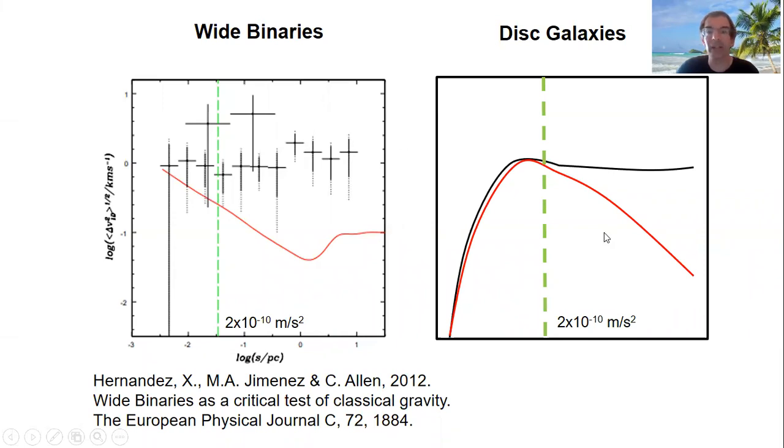This is very similar to the behavior of disc galaxies, and this is shown on the right. So with disc galaxies, as you go out to larger radii, the orbital speed should follow the red curve. So it should first rise and then fall, but in fact it rises and then stays constant, rather like in the wide binaries. And where these two curves separate is at, sure enough, the acceleration 2 times 10 to the minus 10 meters per second per second.